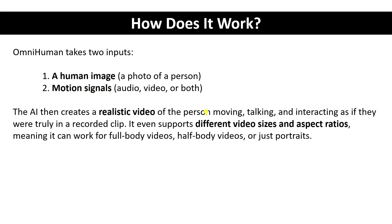OmniHuman-1 takes two inputs. The first is a human image — a photo of a person, which could be anyone. The second is a motion signal, which is the most important one. You can pass in audio, video, or both audio and video, as well as pose or gesture data for the hands.